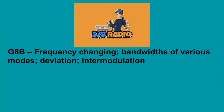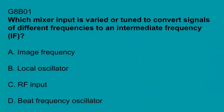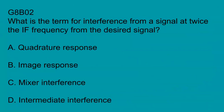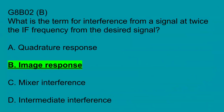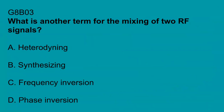G8B covers frequency changing, bandwidths of various modes, deviation, and intermodulation. G8B01: Which mixer input is varied or tuned to convert signals of different frequencies to an intermediate frequency? Local oscillator. G8B02: What is the term for interference from a signal at twice the IF frequency from the desired signal? Image response. G8B03: What is the term for mixing of two RF signals? Heterodyning.